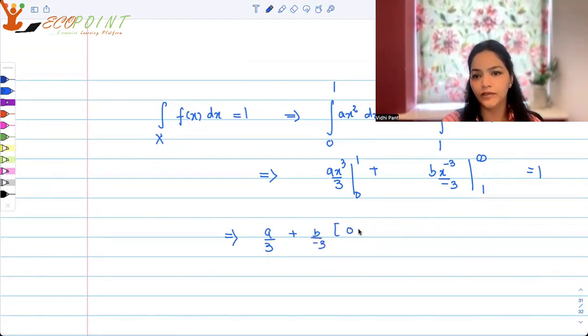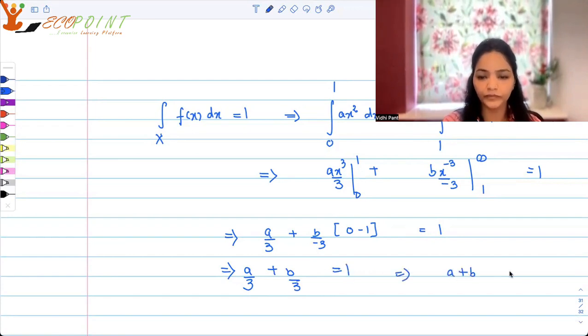This should be 1, which gives us a by 3 plus b upon minus 3. And here again, you will get 0 minus 1 is equal to 1. Or in other words, a by 3 plus b by 3 equals to 1. That is, a plus b is equal to 3. Now I have two equations in two variables.